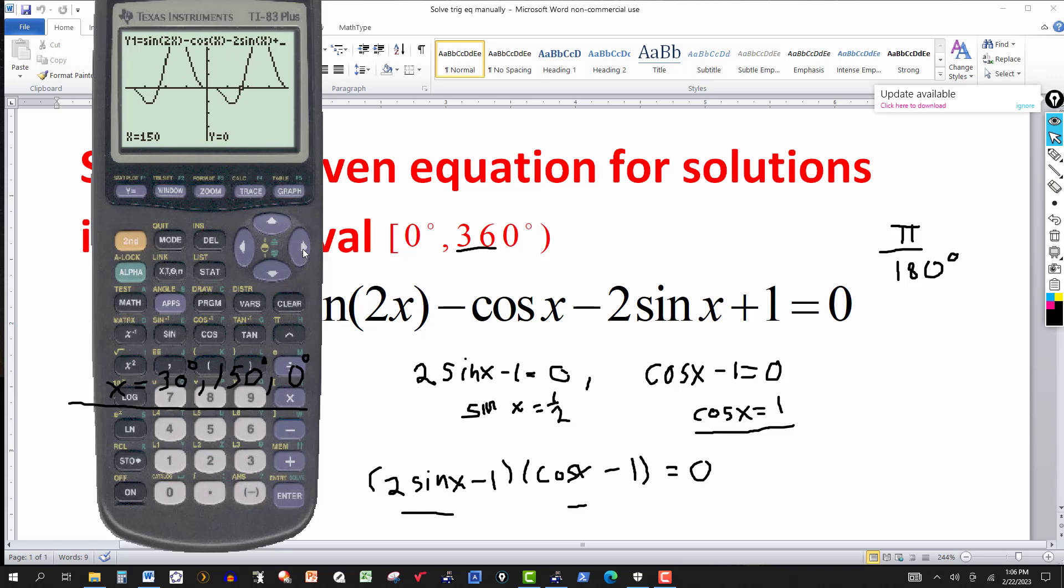And if you keep going, they're going to repeat. So if I keep going, 360, it crosses again. But 360, again, is the repetition of zero over here. And if I keep going, the other ones are going to repeat. But that's the way you can do the solution using the graphing method.